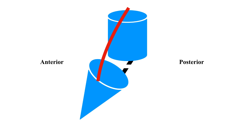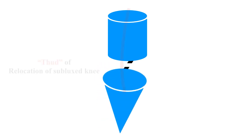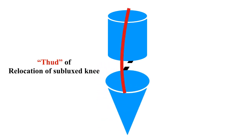It is clearly seen that the tibia is anteriorly subluxed in the sagittal view. As the knee is gradually flexed, the iliotibial band, which acts as the flexor of the knee joint, pulls the anteriorly subluxed tibial plateau back into the knee joint, thus achieving reduction at 20 to 30 degrees of flexion with a thud — called the thud of relocation of the subluxed knee joint — which can be felt and heard during relocation.